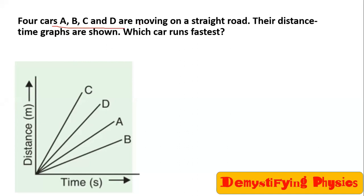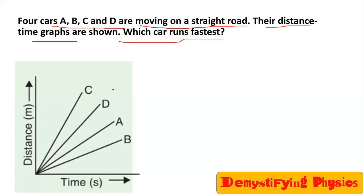Four cars A, B, C and D are moving on a straight road. The distance-time graphs are shown. Which car runs fastest? We can see from here that the four lines are straight lines, which means we can definitely say that A, B, C and D are all moving with uniform speed.